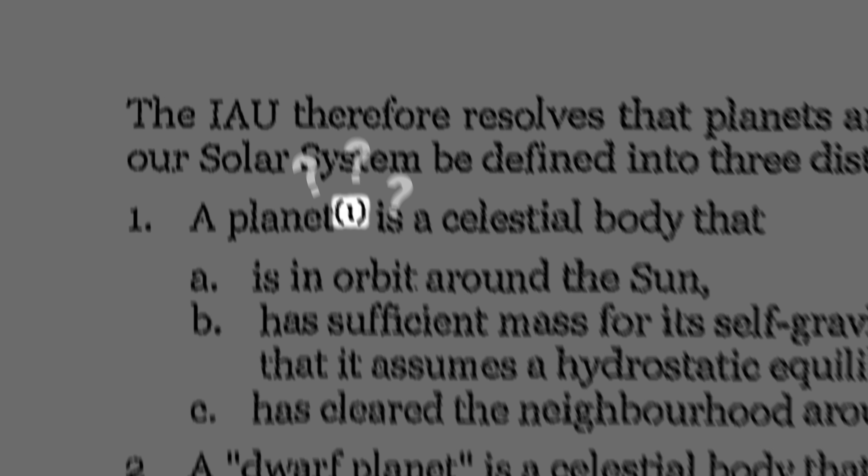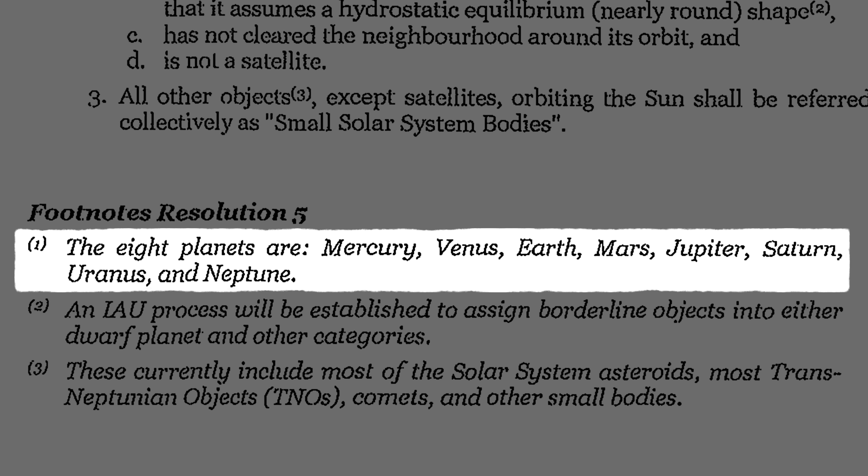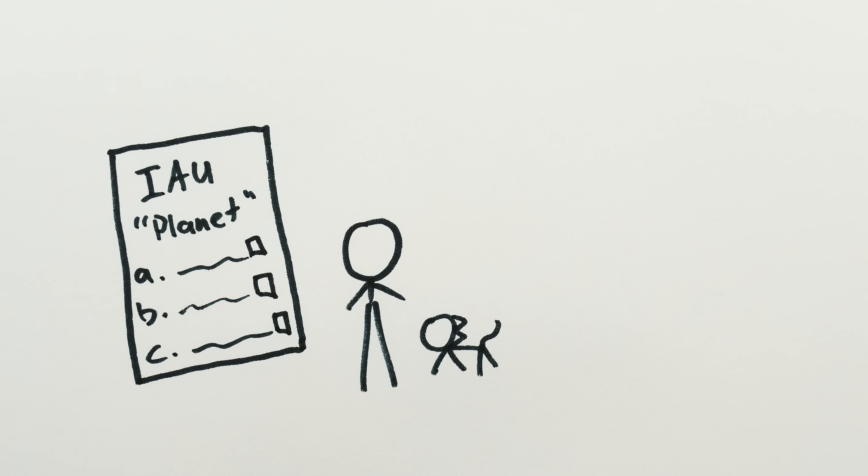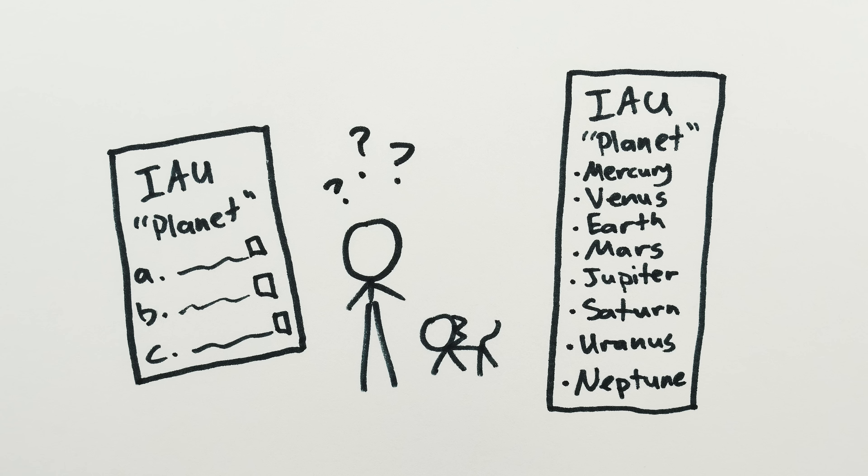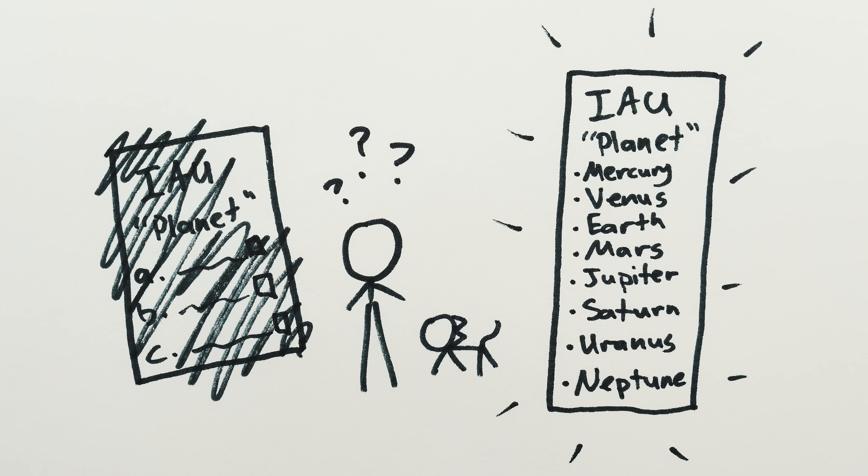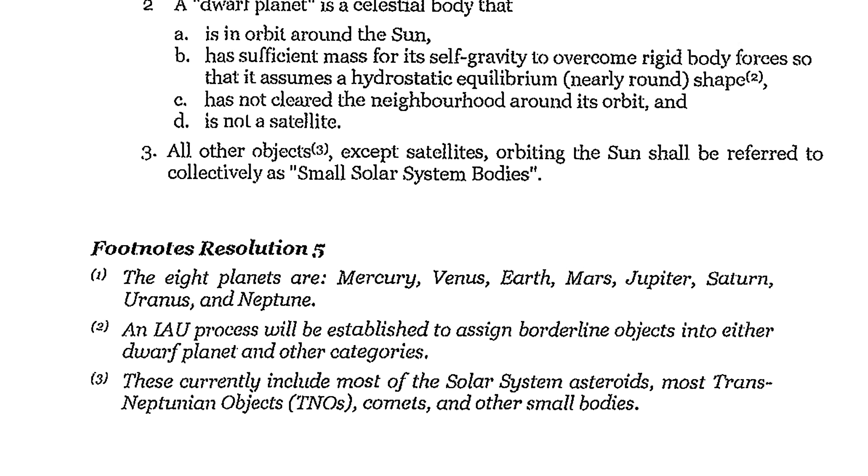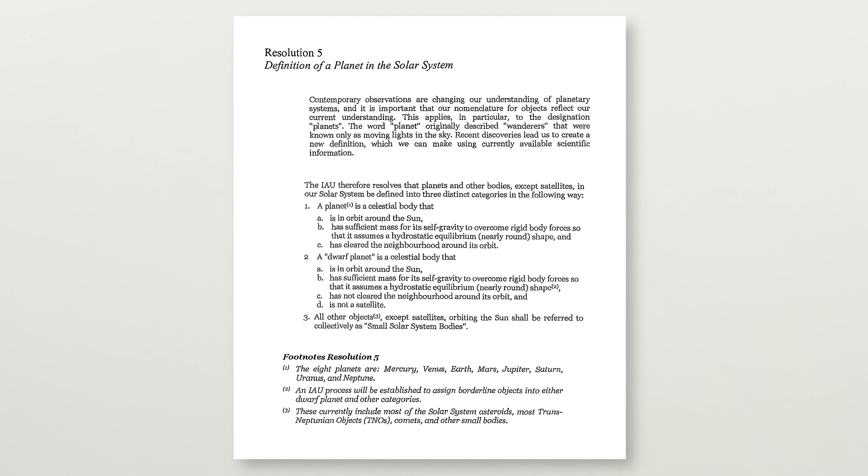But there's one final nail in the Moon's IAU planethood coffin. A footnote. Really? Down here at the bottom it says, the eight planets are Mercury, Venus, Earth, Mars, Jupiter, Saturn, Uranus, and Neptune. Too bad, the Moon isn't on the list. But what was the point of a definition if they were just going to list what they count as planets anyway? Why not just publish the list and be done with it?